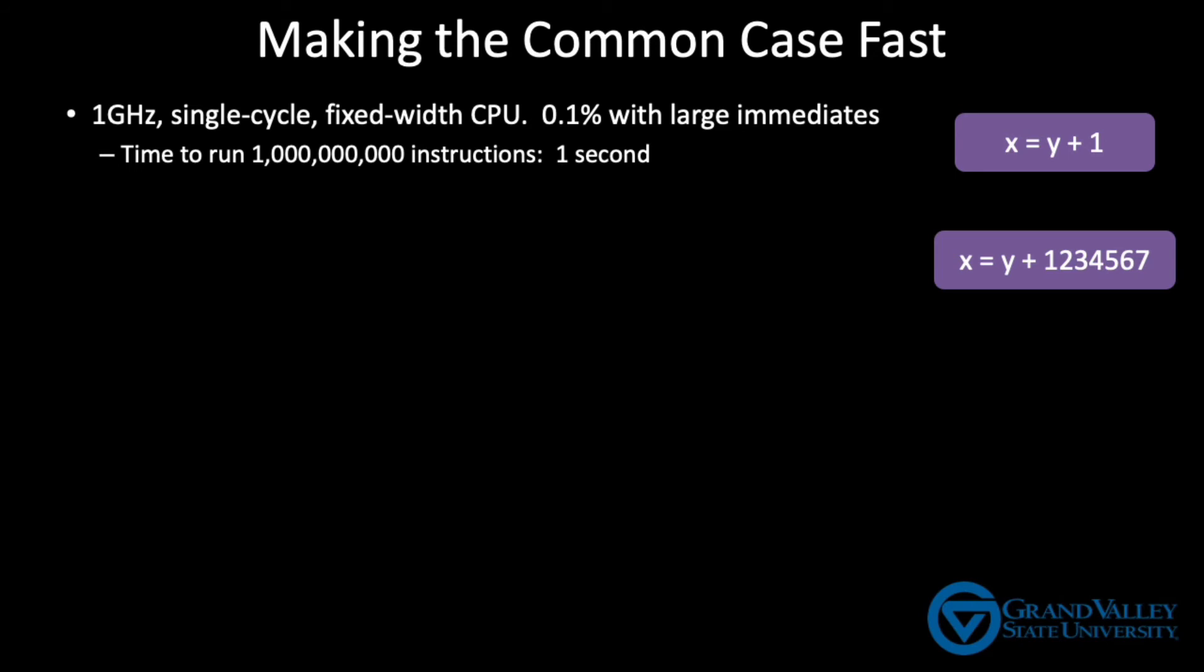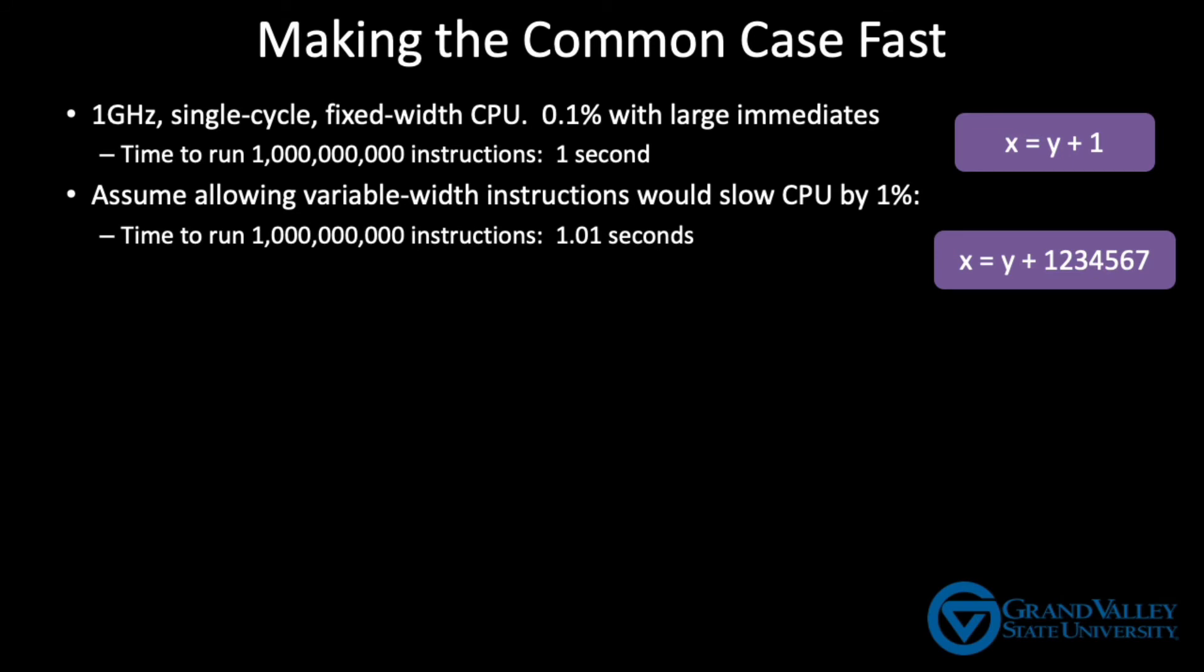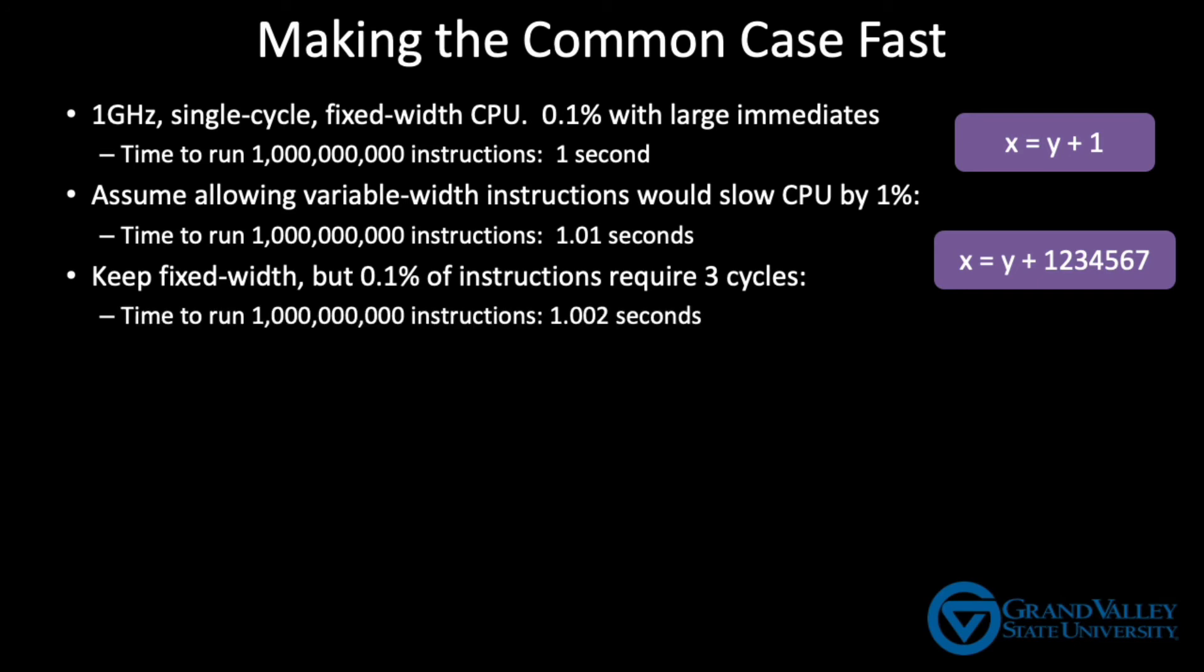First, suppose that if we switch to a variable width instruction set, the critical path would grow slightly and we'd have to slow the clock by one percent. In this case, it would take 1.01 seconds to run the one billion instructions. Or if we take the MIPS approach and replace each instruction that has a large immediate value with a pseudo instruction that requires three real instructions, then our CPU will only need 1.002 seconds to run one billion instructions. By maintaining the speed of the common instructions, even at the expense of the less common instructions, we ended up with a faster CPU overall.